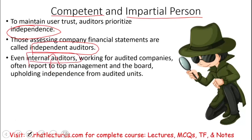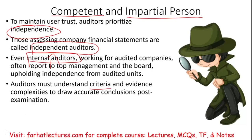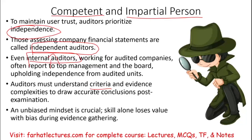Even if you are an internal auditor, you also have to be independent in the sense that internal auditors don't report to management. We're going to see what types of auditors there are — internal and external. Even an internal auditor has to be independent from management. How? You report to the board of directors — a level above management — so you maintain your independence. The auditor must understand the criteria and evidence complexity to draw accurate conclusions; you have to be competent. Independence in fact means really being independent and appearing to be independent — we'll talk about that later, probably in a whole lecture or two.